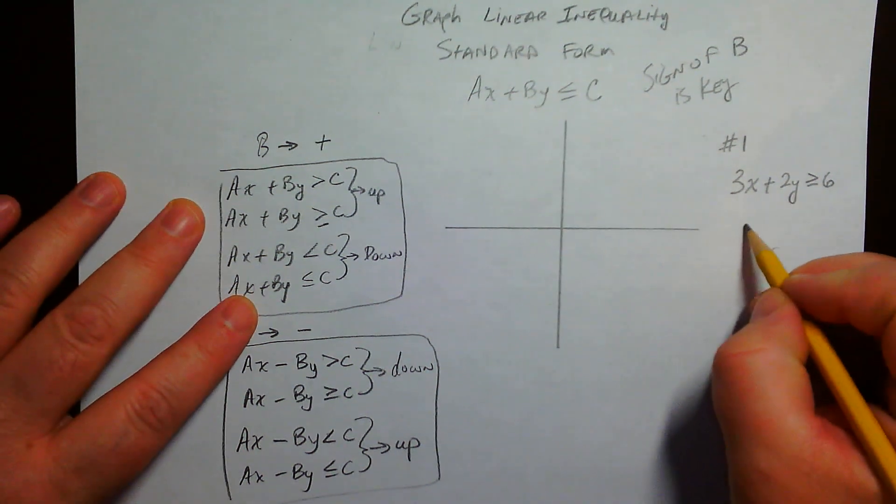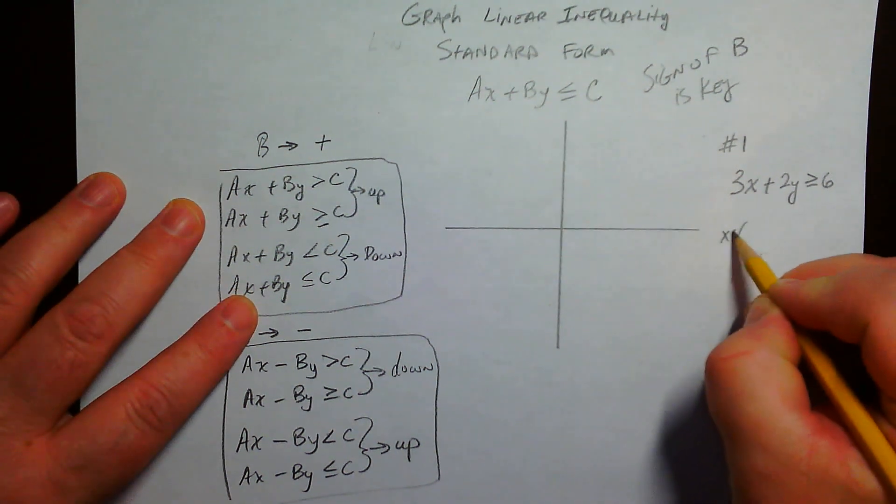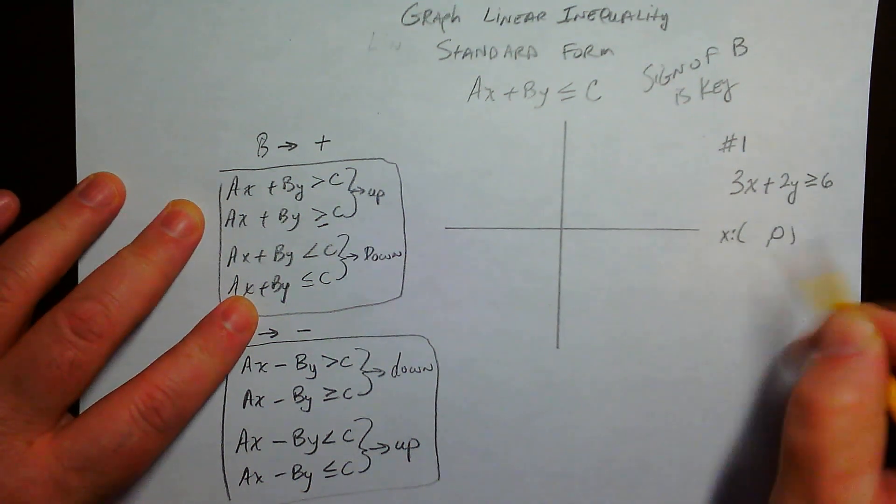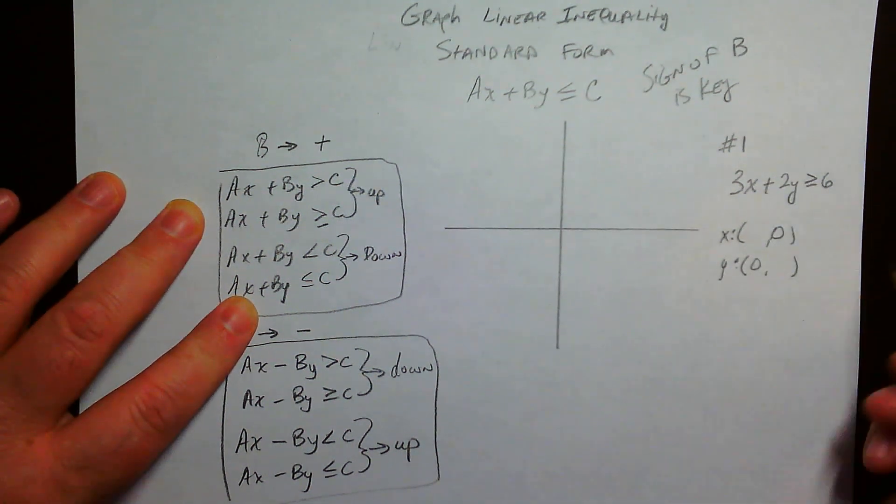If it's in standard form, usually the best way to do it is go ahead and find your intercepts. So you're going to find your x-intercept, put a 0 for y, y-intercept, put a 0 for x.